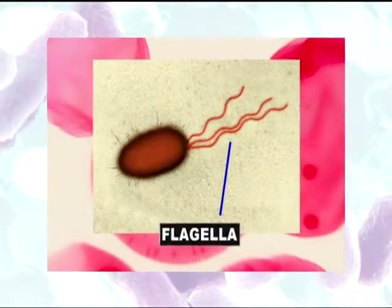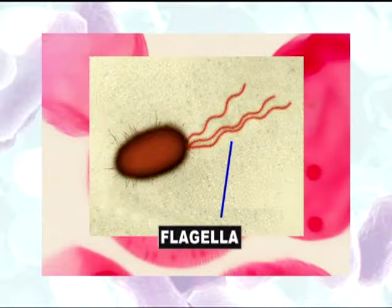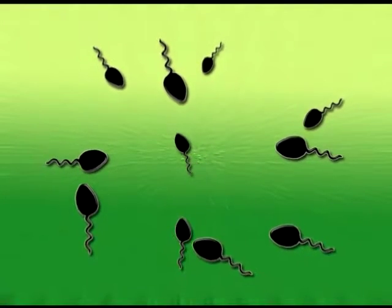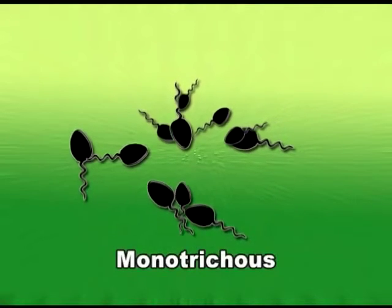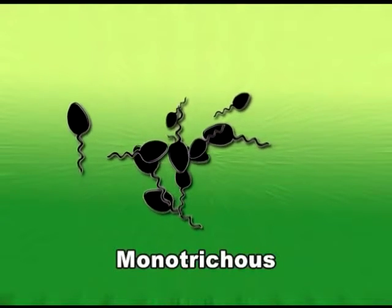Flagella are appendages that help in motility, allowing bacteria to move from one place to another. About half of all known bacteria are motile due to flagella. These flagella vary in number and placement, and their arrangement is an important basis for bacterial classification. When there is only one flagellum at one end, we call it monotrichous, as seen in Pseudomonas aeruginosa.